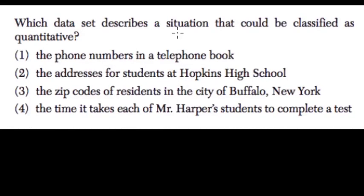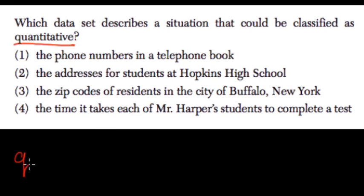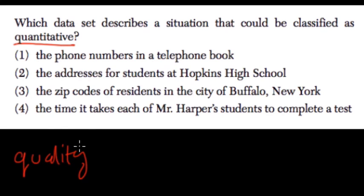Which data set describes a situation that could be classified as quantitative? Quantitative means that it's being defined by the numbers we use. Qualitative, in comparison, looks at the quality of an item — not whether it's necessarily good or bad, but like maybe a flavor of ice cream, a color of your eyes, and so forth.